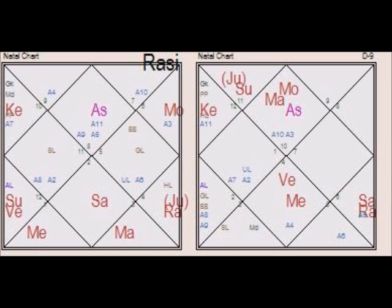Let's look at what Sage Jaimini mentioned about the influence of the Atmakaraka in the D9 chart — in other words the Karakamsa chart. The Atmakaraka placed in the D9 or Navamsa chart is the Karakamsa. What Sage Jaimini mentioned is that in case the Atmakaraka in the D9 chart is placed with the planet Rahu — and we know that Rahu is a cheat, Rahu is a thief, Rahu is a criminal — then a person leads his life in a profession of a criminal.